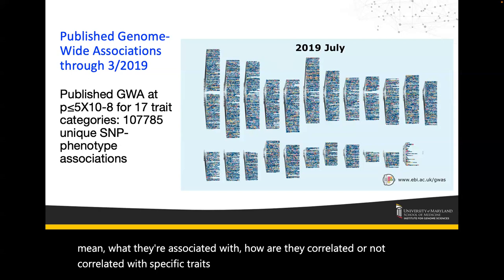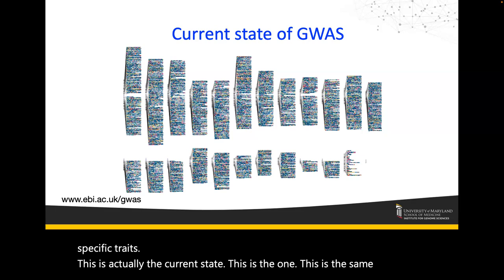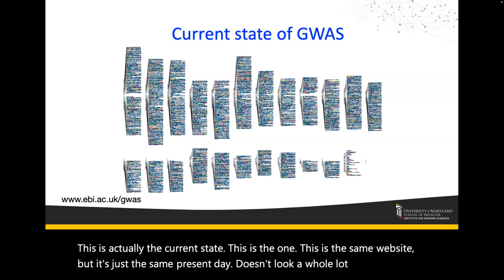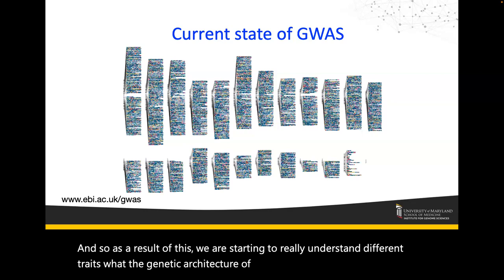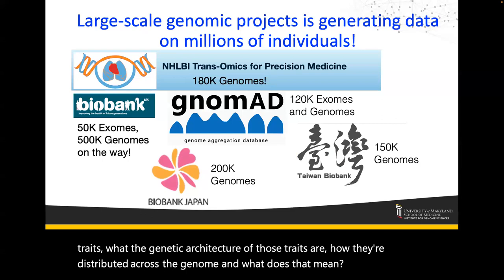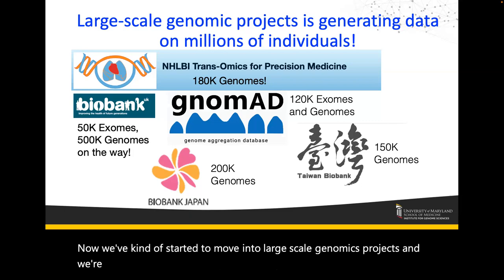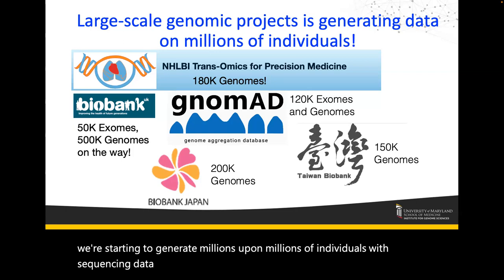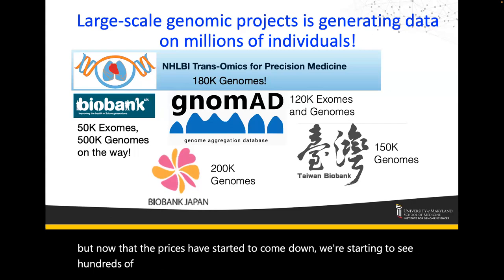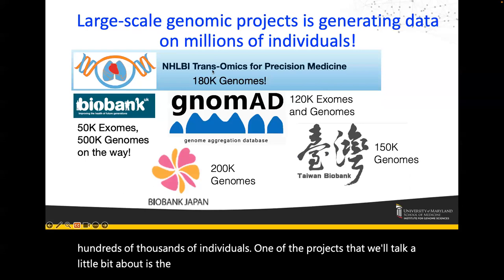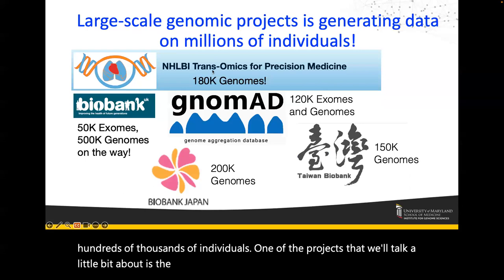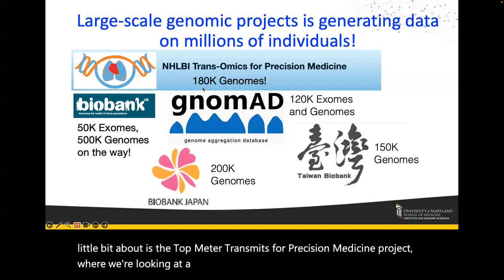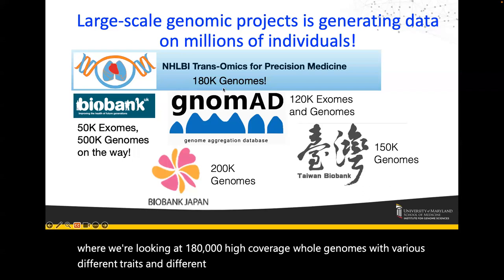This is the current state — the same website today — and it doesn't look a whole lot different just because there's so much information. As a result, we're starting to really understand different traits, what the genetic architecture of those traits is, and how they're distributed across the genome. We've started to move into large-scale genomics projects, generating data on millions of individuals. One project is TOPMed — the Trans-Omics for Precision Medicine project — where we're looking at 180,000 high-coverage whole genomes with various traits and populations.